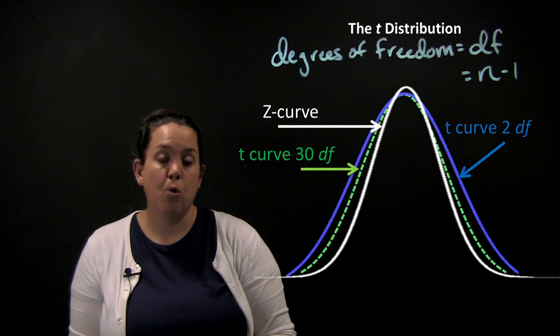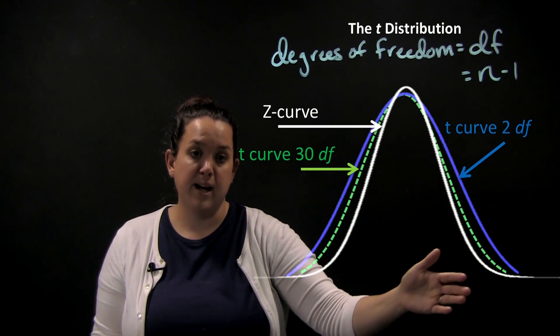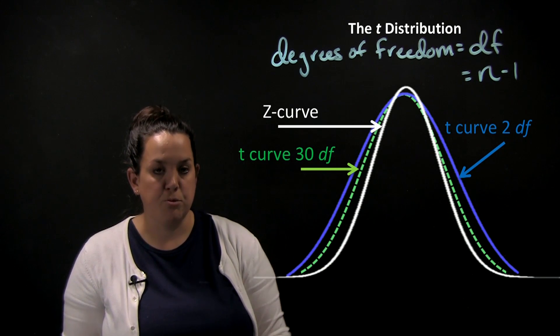The more degrees of freedom you have, or the larger the sample size, the more area that will be contained in the center of the curve or in the height, and the less area that will be contained in the actual tails of the distribution.